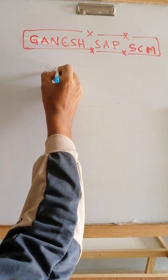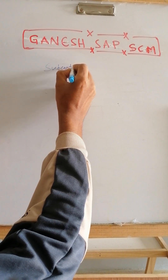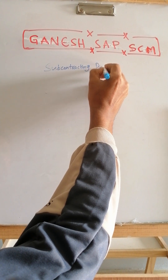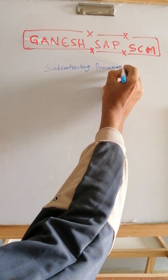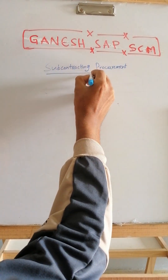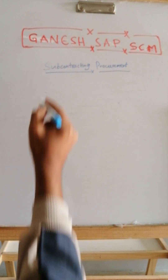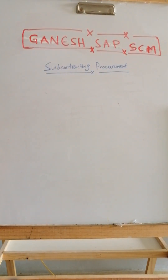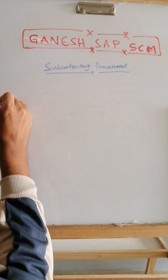In multiple videos and multiple documents we have discussed about the SAP steps and accounting entries, but in this video we are going to see the business process and how it happens. For anyone who is preparing for an interview, subcontracting accounting entries are very special because they are complex and confusing to many people, and there are quite a few entries involved.